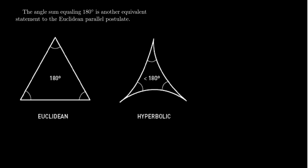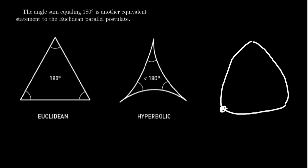What would an elliptic triangle look like? It bows outward, and the angles are obtuse — the angle sum is greater than 180 degrees. Like a bloated triangle. Again, a large elliptic triangle will have an angle sum very far from 180 degrees, but a small elliptic triangle will have its angle sum very close to 180 degrees. So if you're looking at a triangle that's only a speck compared to the whole geometry, it'll be very difficult to tell whether it's elliptic, Euclidean, or hyperbolic, because they're all approximately 180 degrees.